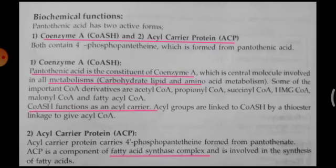Next is the biochemical function of coenzyme A. Pantothenic acid has two active forms: coenzyme A and ACP. Coenzyme A is a central molecule involved in all metabolisms — lipid, amino acid and carbohydrate metabolism. Some of the important CoA derivatives are acetyl-CoA, propionyl-CoA, succinyl-CoA, HMG-CoA, malonyl-CoA and succinyl fatty acyl-CoA. In all these names you can see they end with coenzyme A.